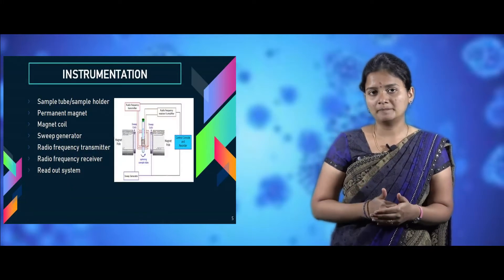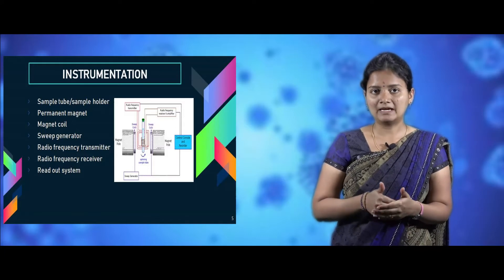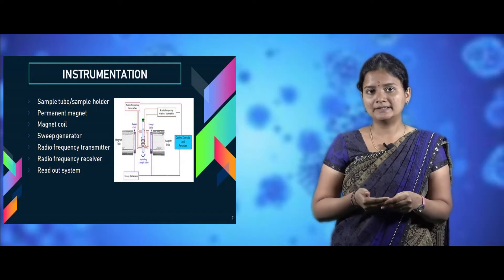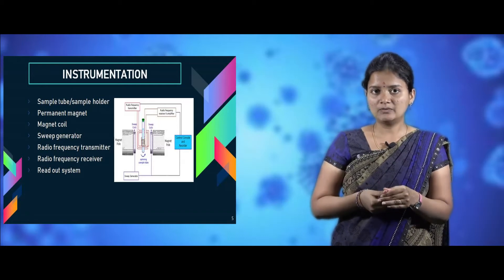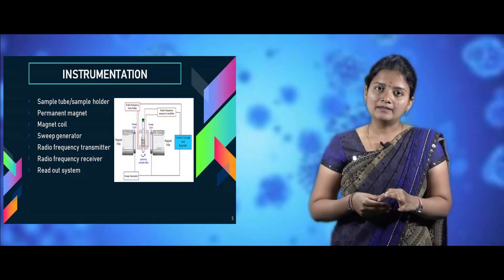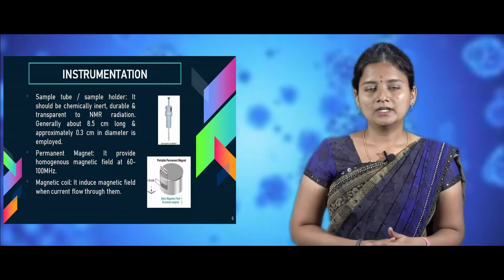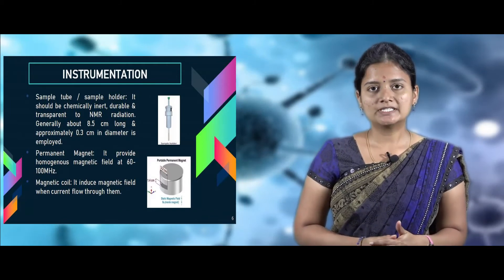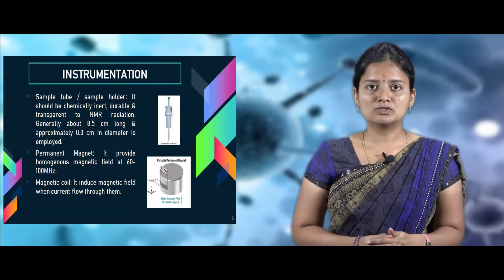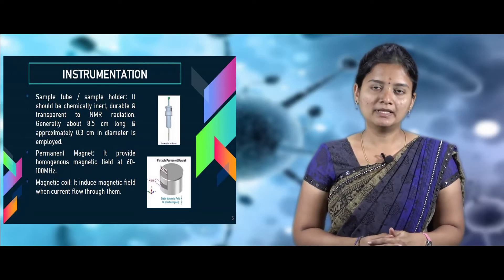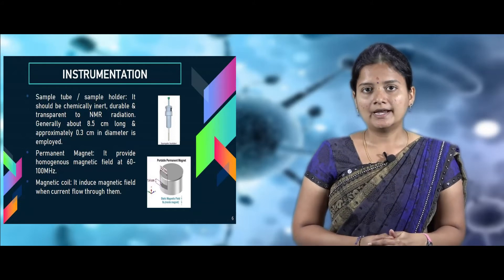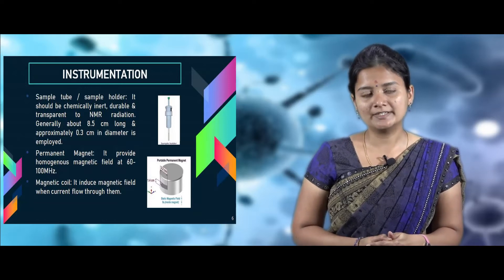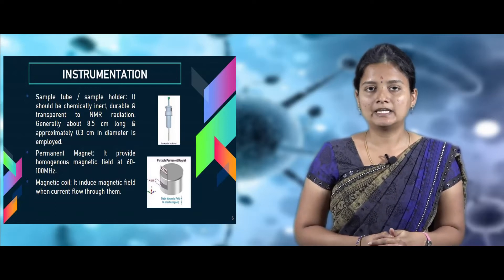The NMR instrument has a sample tube or sample holder, magnetic coil, permanent magnet, sweep generator, radio frequency receiver and transmitter, and a readout system. The sample tube must be chemically inert, durable, and transparent to NMR radiation. It has to be 8.5 centimeters long and 0.3 centimeters in diameter.